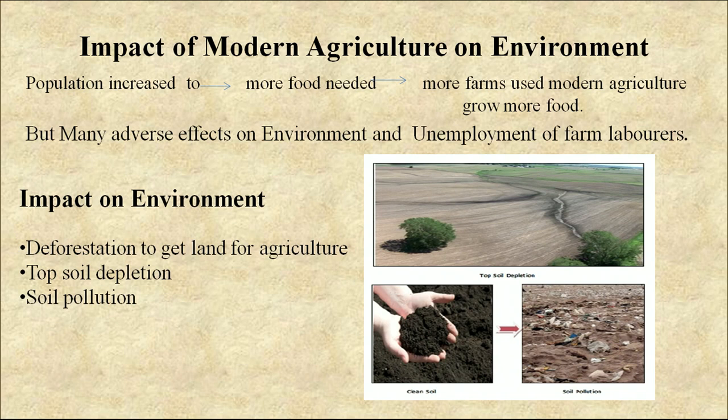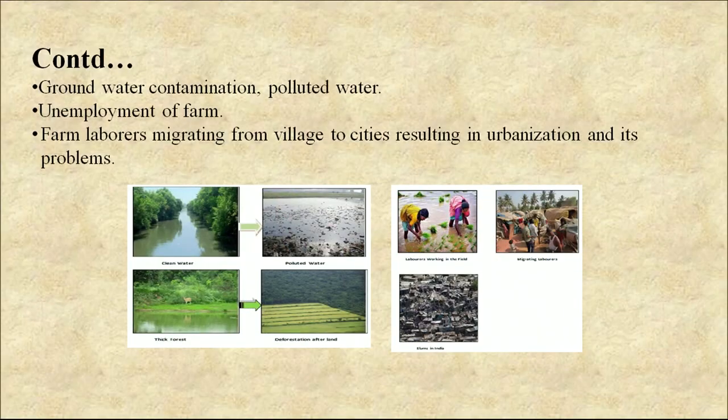The impacts of modern agriculture on the environment include deforestation to get land for agriculture, topsoil depletion, soil pollution, groundwater contamination, and polluted water. Unemployment of farm laborers led to migration from villages to cities, resulting in urbanization and its associated problems.